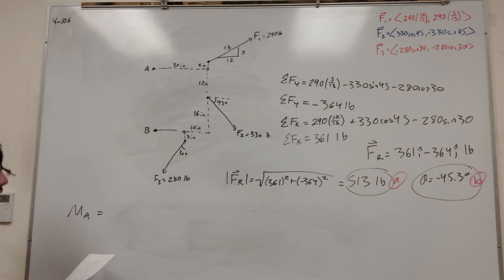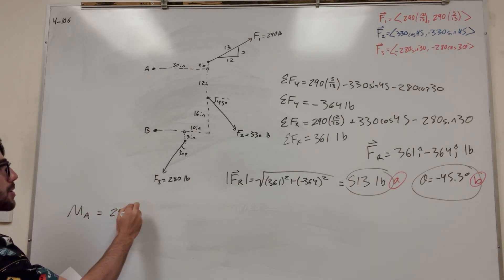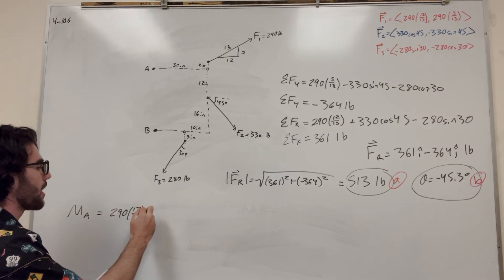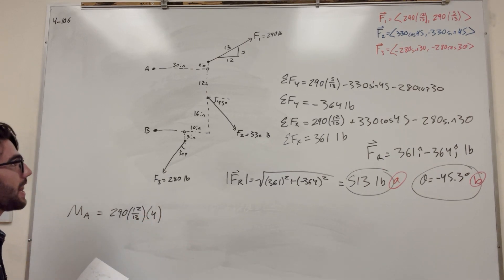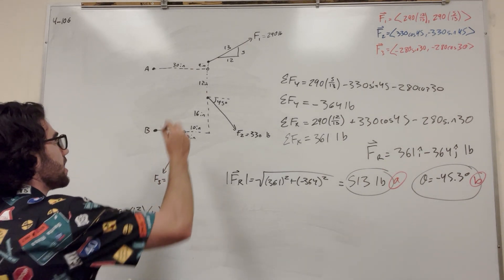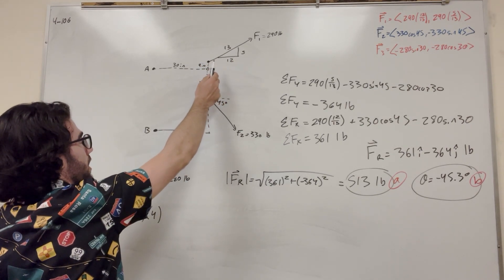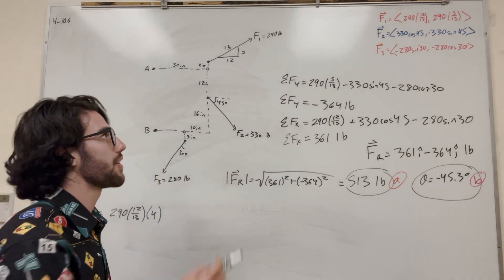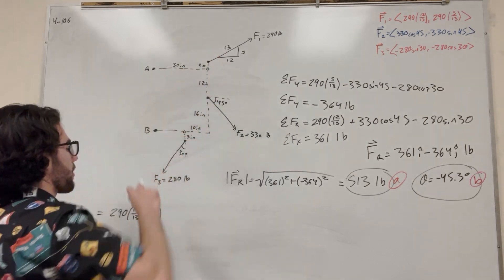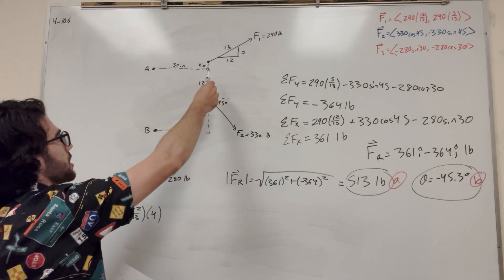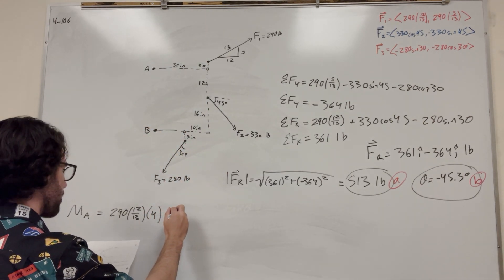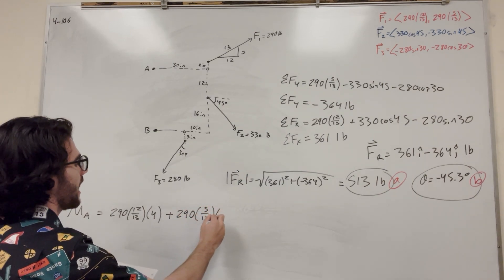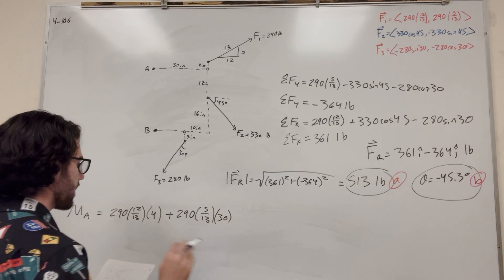Starting with Force 1: it goes 290 times 12/13 in the X direction, and its distance in the Y direction is 4 inches. If it's pulling in the X direction, it makes it go counterclockwise, which is positive. Then for the Y component: 290 times 5/13, and its distance in the X direction is 30 inches. The Y direction is also making it go counterclockwise, so we add that too.